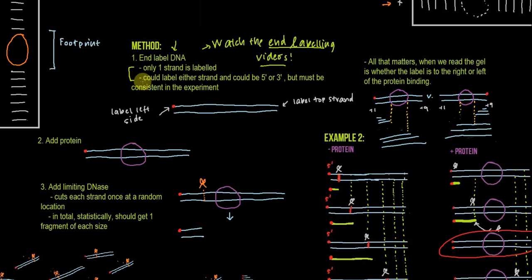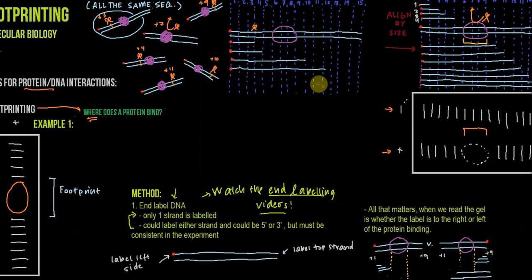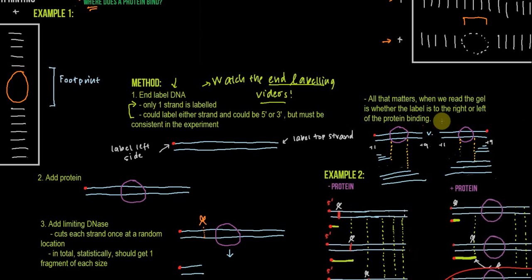For the purpose of DNA footprinting, there are two things about end labeling you need to know. The first is that only one strand is labeled — we don't want two strands labeled, just one. The second is that you could label either strand; it doesn't have to be one specific strand, it could be either, it just can't be both. It could be the five prime end or the three prime end. But whatever you do, it must be consistent throughout the experiment. All those DNAs in the population need to be labeled the same way — you can't have a mixture.